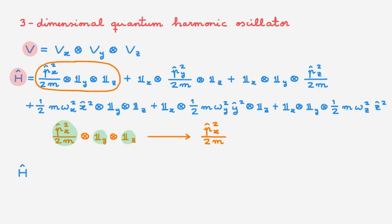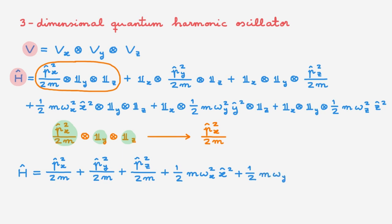Using this simplified notation, we can write the full Hamiltonian as equal to the kinetic energy along x, the kinetic energy along y, the kinetic energy along z, plus the potential energy along x, the potential energy along y, and the potential energy along z. When we work with tensor product state spaces, we use this simpler notation whenever possible. While this works fine for many types of calculation, it is important to keep in mind that we're really working in a tensor product state space, as this can become important to avoid potential ambiguities. We will combine the use of both notations throughout the video.